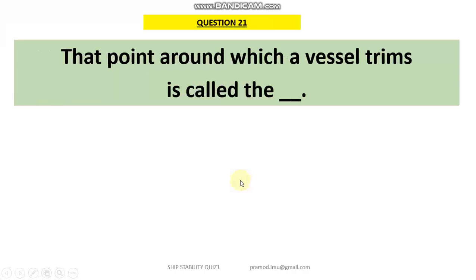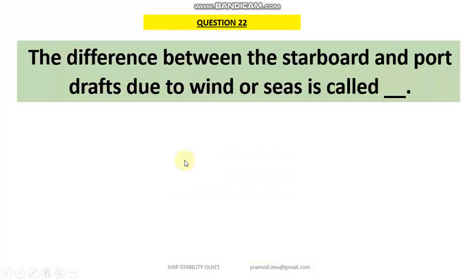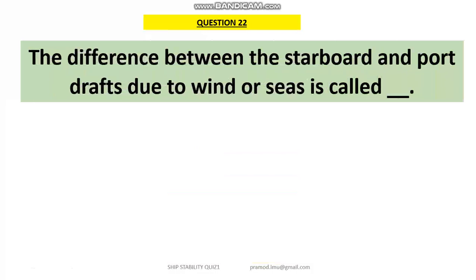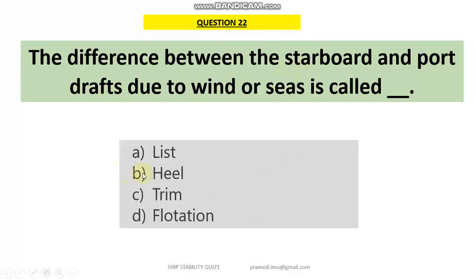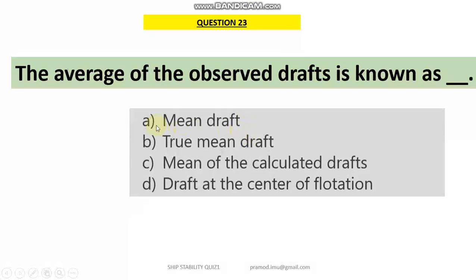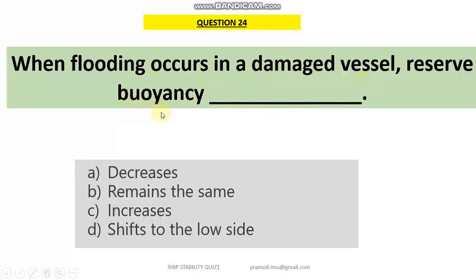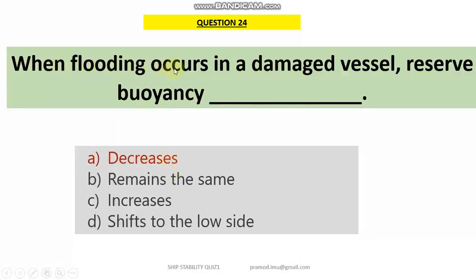Question 21: the point about which a vessel trims is what we call — option A — the center of flotation, the point about which all trimming calculations are done. Question 22: the difference between starboard and port side drafts because of external reasons is what we call heel — the vessel has developed a heel. Question 23: the average of observed drafts in ship terminology is what we call mean draft. Question 24: when flooding occurs in a damaged vessel, the reserve buoyancy will definitely decrease, and the vessel stability will also decrease.